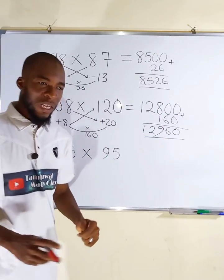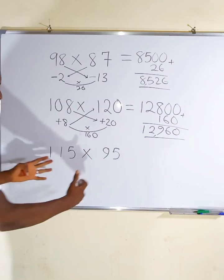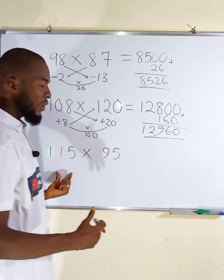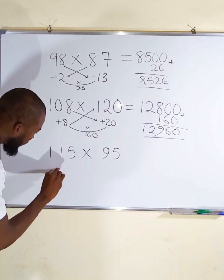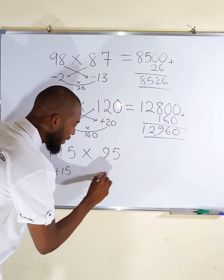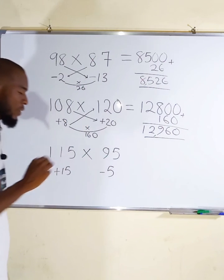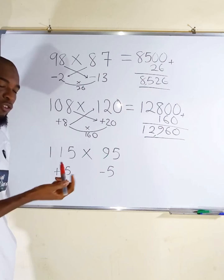108 by 120 equals 12,960. Now let us take the last one. The last one is a combination of two numbers. The first one is greater than 100 while the second is less than 100. This one is 15 greater than 100, but this one is 5 less than 100.